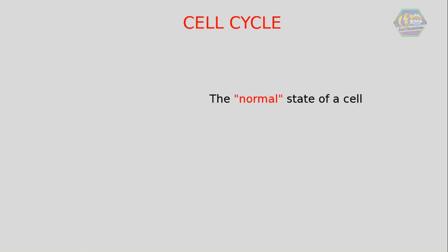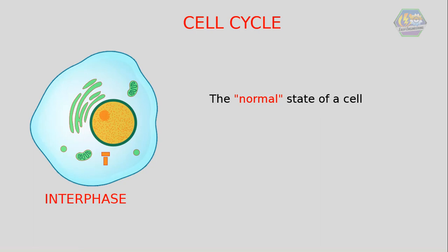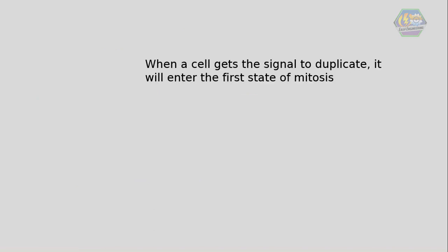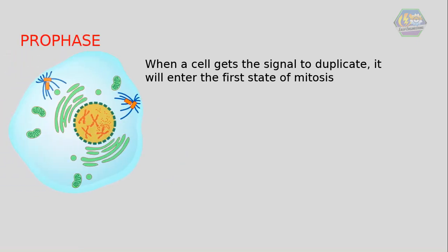In mitosis, cells go through different phases called the cell cycle. The normal state of a cell is called interphase. Interphase is the period when the cell isn't dividing. It begins when the new cells are done forming and ends when the cell prepares to divide. Although it's also called a resting stage, there's constant activity in the cell during interphase.